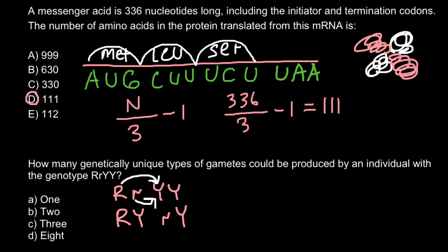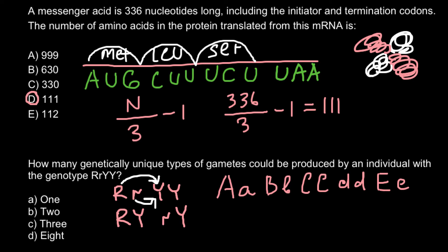But what if the genotype were, for example, Aa Bb CC Dd Ee and so on? How can you find the number of possible variants? This is very easy — all you need to know is the formula 2 raised to n, where n stands for the number of heterozygous gene pairs. Here we have one, two, and three heterozygotes, so the answer is 2 raised to 3, which is 2 × 2 × 2 = 8 possible gamete variants.